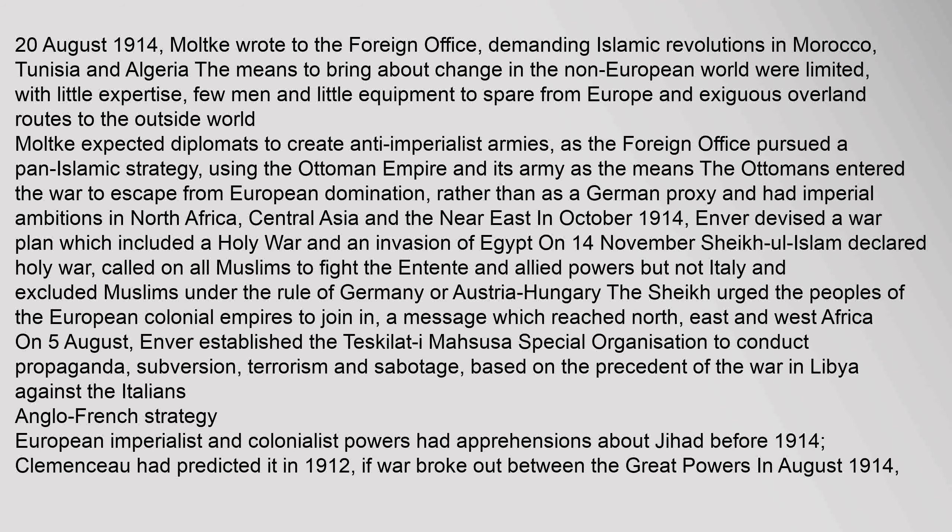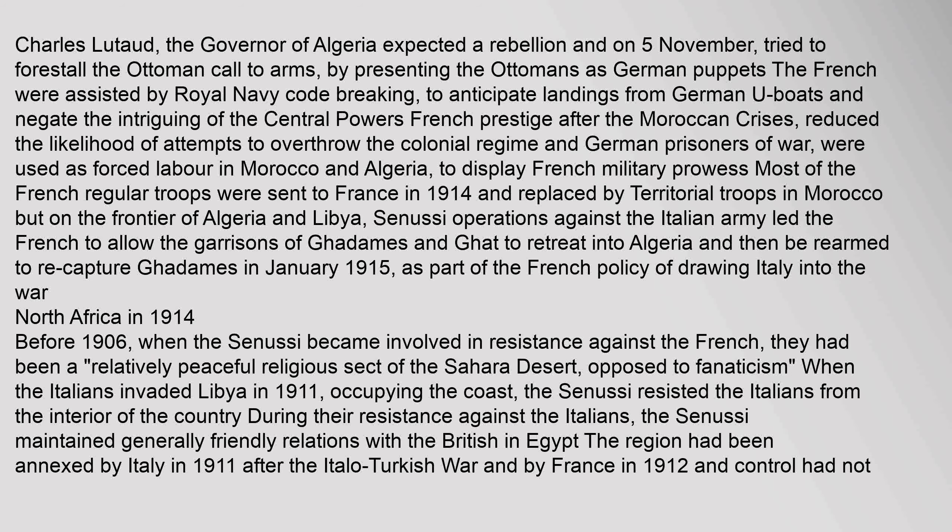Anglo-French strategy: European imperialist and colonialist powers had apprehensions about Jihad before 1914. Clemenceau had predicted it in 1912. In August 1914, Charles Ludo, the governor of Algeria, expected a rebellion and on 5 November tried to forestall the Ottoman call to arms by presenting the Ottomans as German puppets. The French were assisted by Royal Navy code-breaking to anticipate landings from German U-boats and negate the intriguing of the Central Powers. French prestige after the Moroccan crises reduced the likelihood of attempts to overthrow the colonial regime, and German prisoners of war were used as forced labour in Morocco and Algeria to display French military prowess. Most French regular troops were sent to France in 1914 and replaced by territorial troops, as part of the French policy of drawing Italy into the war.